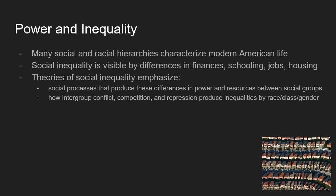The first social mechanism, power and inequality, recognizes that many social and racial hierarchies characterize American life. Social inequality is visible through differences in opportunities for financing and schooling, jobs and housing. Sociological theories of social inequality emphasize that social processes produce these differences in power and resources between social groups, and also how intergroup conflict, competition, and repression produce inequalities by race, class, and gender.